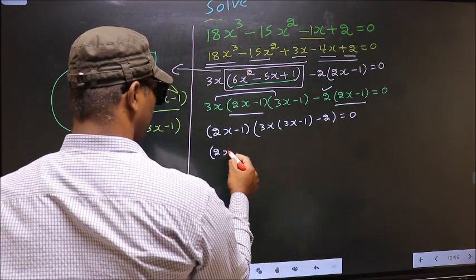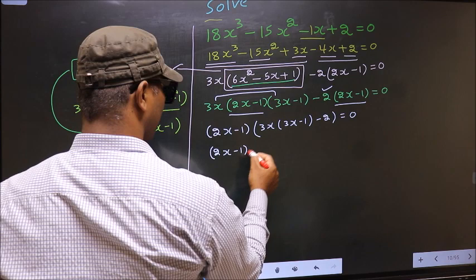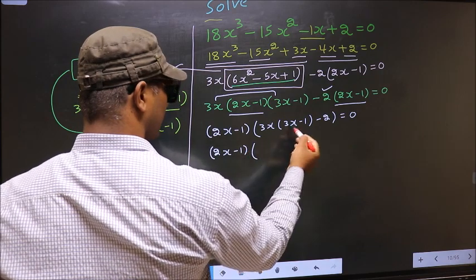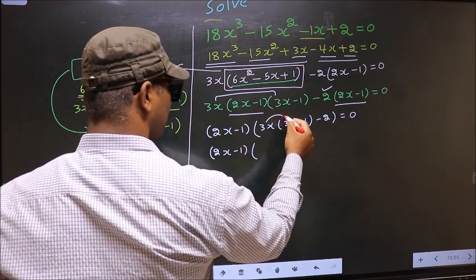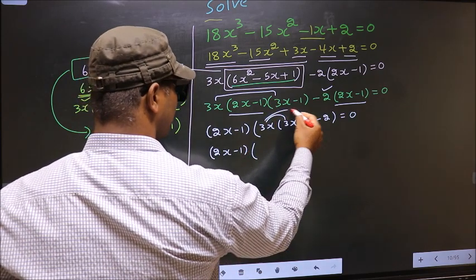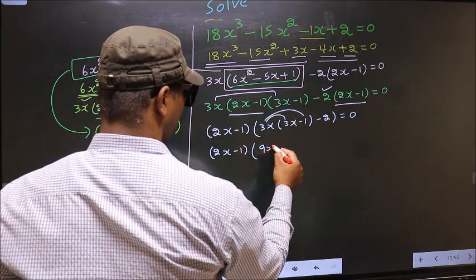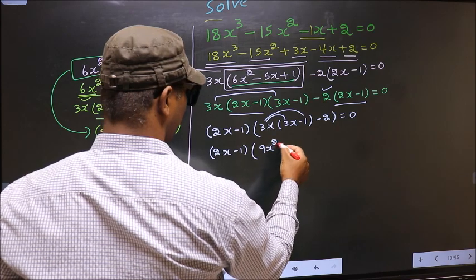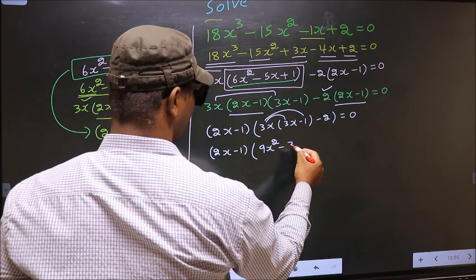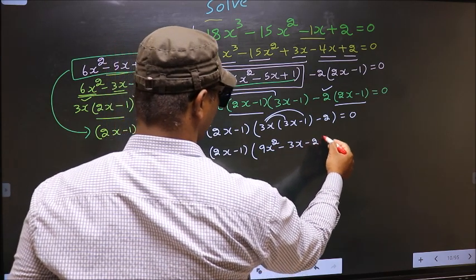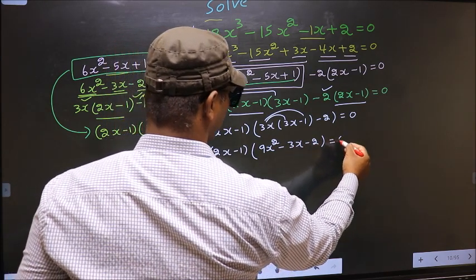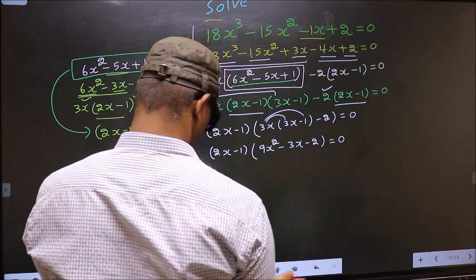Now 2x minus 1. Here you open up the brackets in this way. You get 9x square minus 3x minus 2, equal to 0.